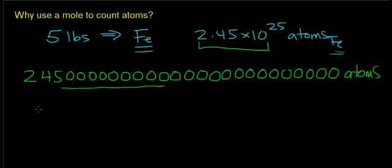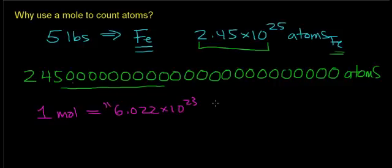Now, one mole of atoms equals 6.022 times 10 to the 23. So just like the word a dozen means 12, one mole means 6.022 times 10 to the 23.